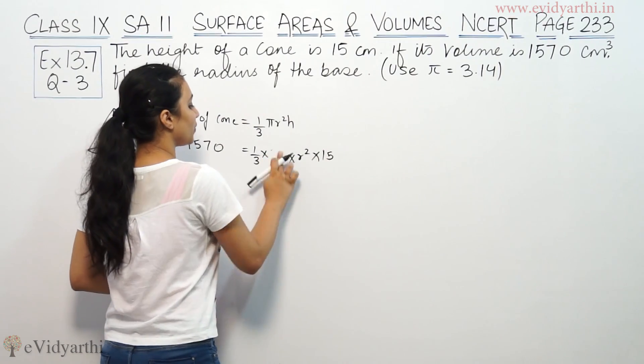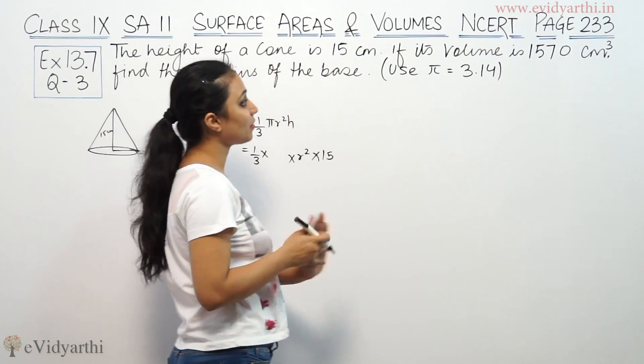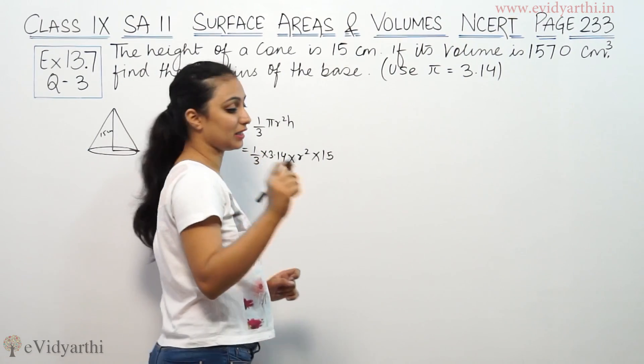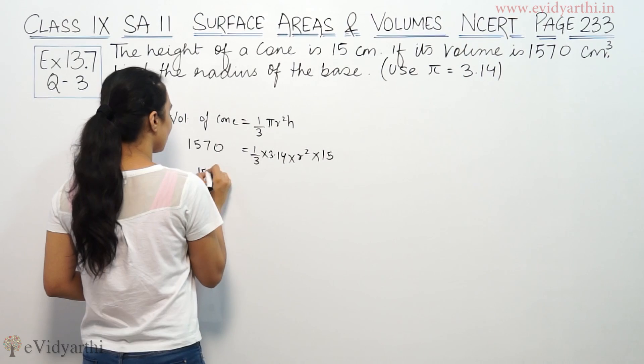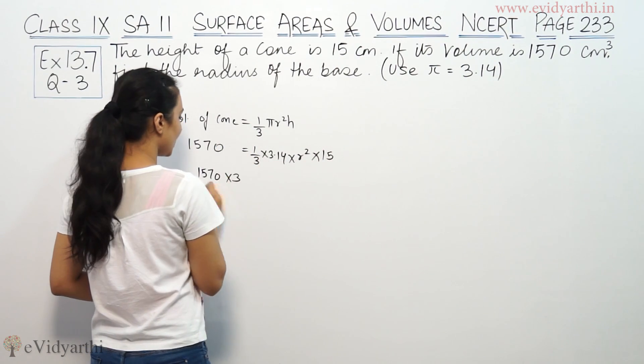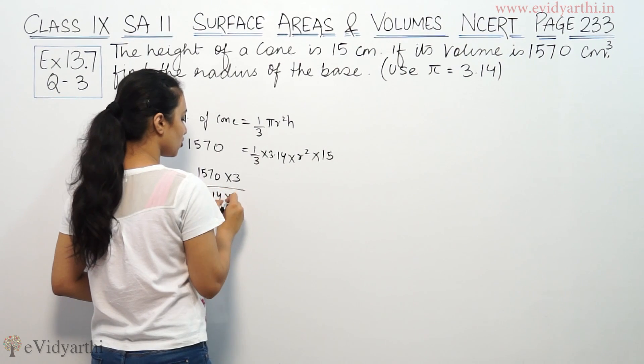Simplifying the equation, we rearrange the terms. 1570 times 3 goes to one side, and these terms on the other side. We'll simplify step by step.